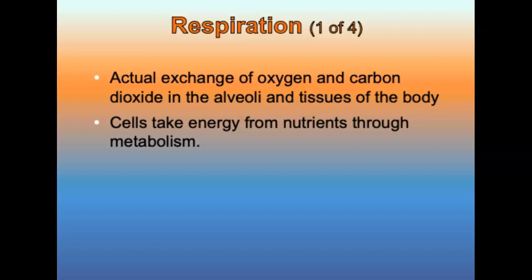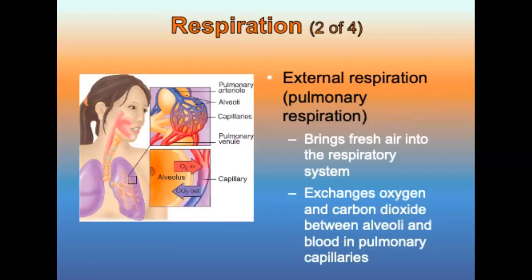Respiration is the actual exchange of oxygen and carbon dioxide in the alveoli and in tissues of the body. Cells take energy from nutrients through a series of chemical processes known as metabolism, or cellular respiration. Each cell combines nutrients and oxygen producing energy and waste products — mainly water and carbon dioxide. External respiration, also called pulmonary respiration, brings fresh air into the respiratory system and exchanges oxygen and carbon dioxide between the alveoli and pulmonary capillaries. Surfactant keeps alveoli expanded, making it easier for gas exchange to occur.